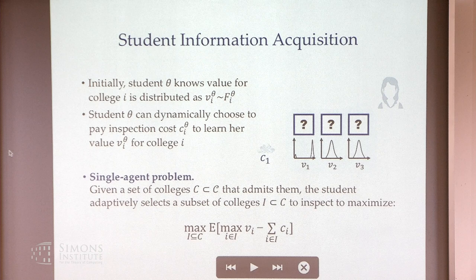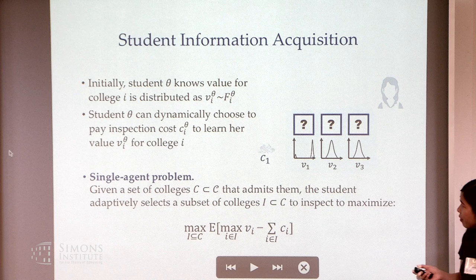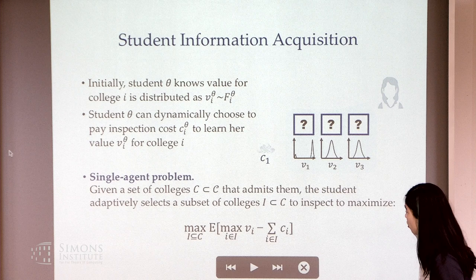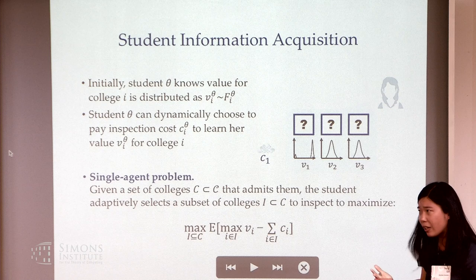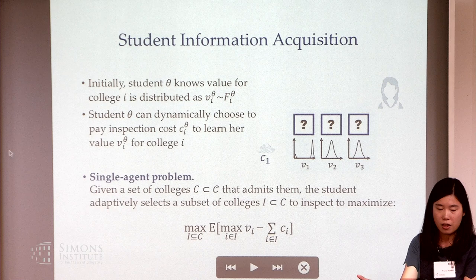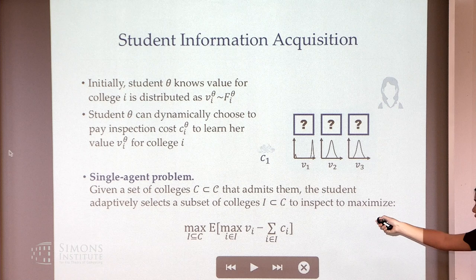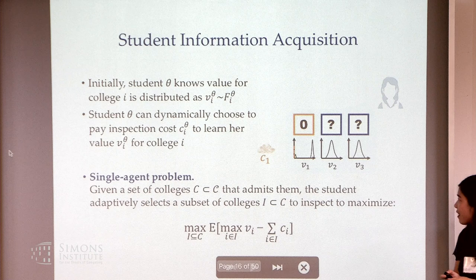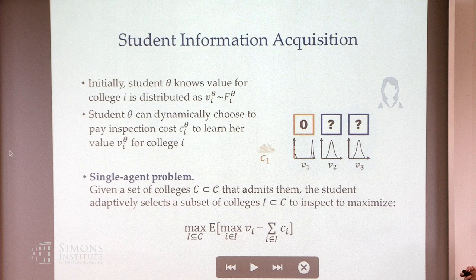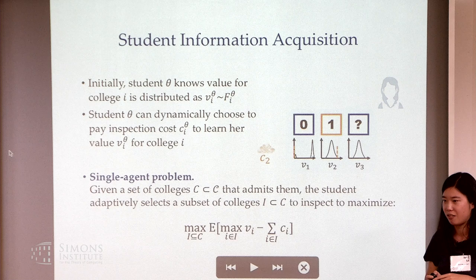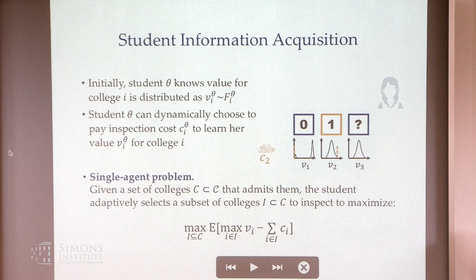Let me describe the single-agent problem, which is just the Weitzman Pandora's box problem. A student theta knows her value for college i is distributed according to prior F. She can dynamically choose to pay her inspection cost to inspect colleges and then decide what to do next. For example, she might inspect college one, discover she has value zero, then inspect college two, discover she has value one, and decide to go to college two without inspecting college three.